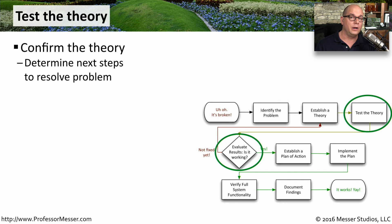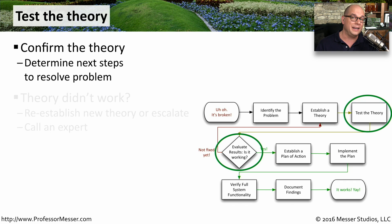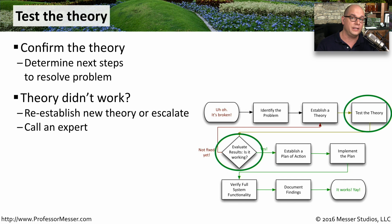Now that we can go to our list, we'll start at the top, and we'll start testing the theories that we have that might be causing this particular issue. We can then determine what the next steps might be to resolve the problem, and see if that actually solves the issue. If it doesn't work, then we need to go to the next on our list and try resolving it with that particular theory. And if we get through this entire list and we still don't know what might be happening, it might be worthwhile to call an expert, have them come in, and give you additional ideas of what might be causing this particular issue.